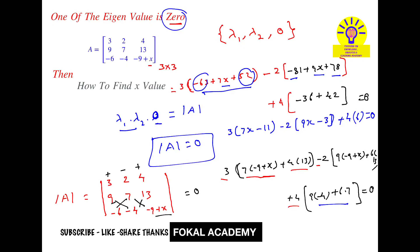Now simplify it partially. This becomes 3 into 7, that's 21x minus 33, next minus 18x plus 6 plus 24. That's equal to 0.